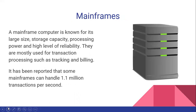The next type of computer is mainframes. A mainframe computer is known for its large size, storage capacity, processing power, and high level of reliability. They are mostly used for transaction processing such as tracking and billing. The next time you ask your parent to purchase a new gaming console online, that transaction will be processed by a mainframe. It has been reported that some mainframes can handle 1.1 million transactions per second.